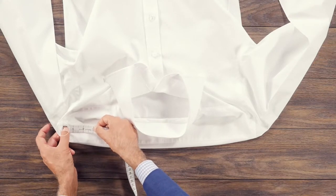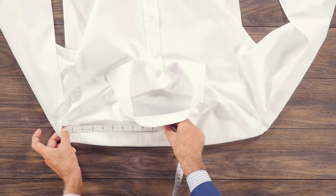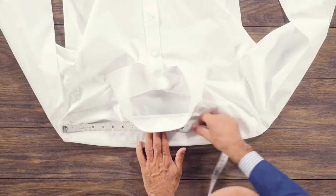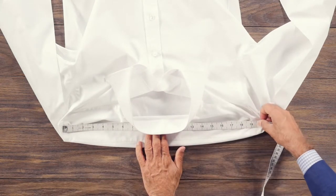With the shirt flat, measure across the shoulder yoke from the edge of the seam to the other side, keeping the tape measure approximately 1 inch behind the back middle of the shirt's collar.